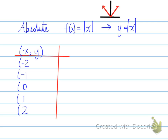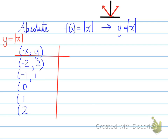In terms of what we need to know: absolute means the number, not the sign. So if I take the absolute of negative 2, the value is 2. Absolute of negative 1 is 1. Absolute of 0 is 0. Absolute of 1 is 1. And absolute of 2 is 2.